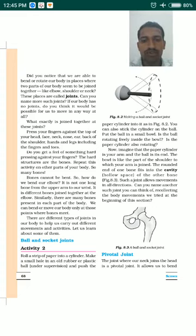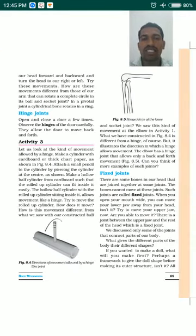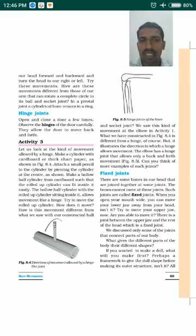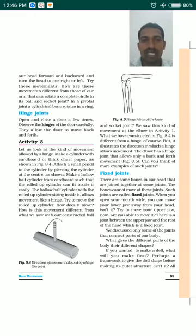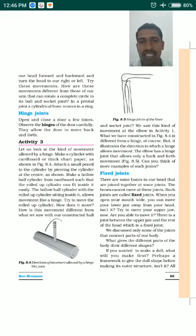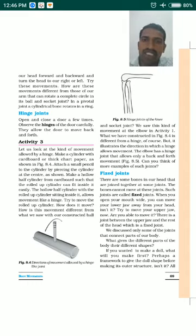The pivot joint allows bending in two directions — it allows us to move our head in the forward direction as well as the backward direction, and also to turn our head to the left as well as the right. You can try these movements yourself to verify.